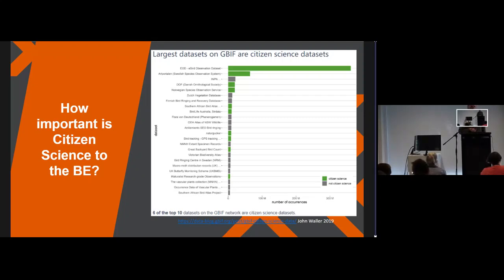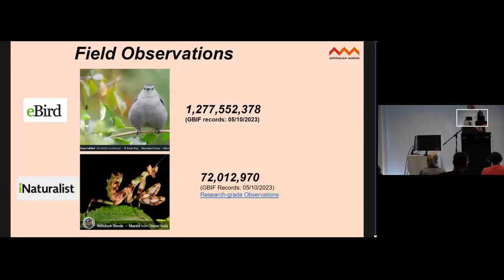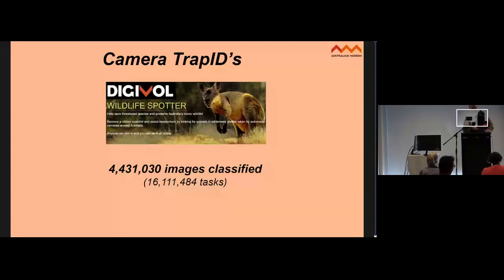Citing these numbers of data points is convenient and pretty impressive, but it's a bit hard to grasp what it really means in terms of effort and value. For camera trap IDs, one example is Digivol's Wildlife Spotter project at the Australian Museum — 4 million images classified. For labelled transcriptions, Digivol has 860,000 and Notes from Nature nearly 5 million, showing the multiple ways citizen science contributes.